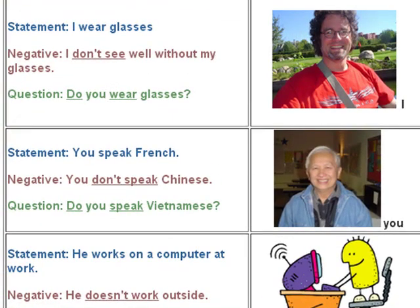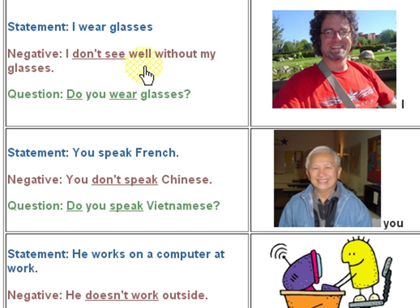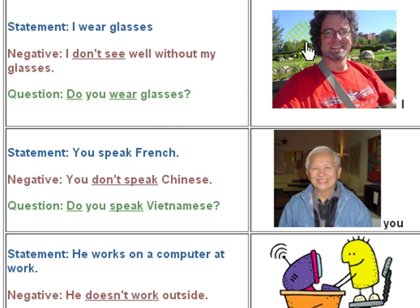Here we have some sentences using 'do' and pictures to help you understand. A statement: 'I wear glasses.' To make that a negative: 'I don't see well without my glasses.' And to make that a question, we say: 'Do you wear glasses?' And you can see he does wear glasses.